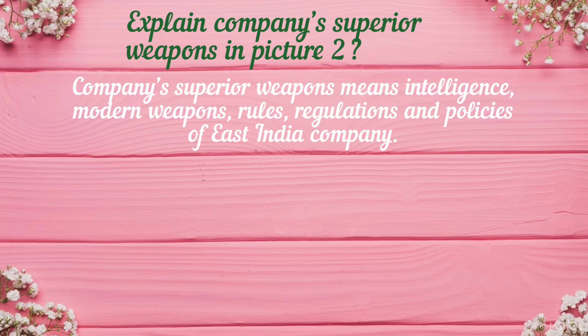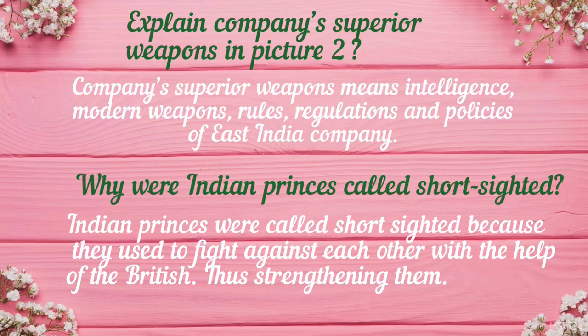Why were Indian princes called short-sighted? The Indian princes were called short-sighted because they used to fight against each other with the help of the British, thus strengthening them. The Indian princes could not understand the prime motive of the British, which was to rule over our country.